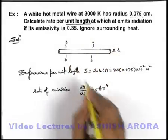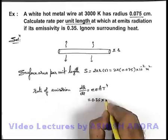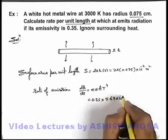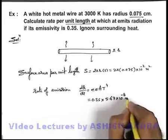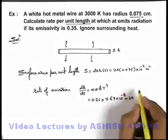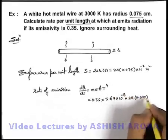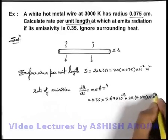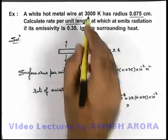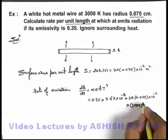So we substitute the values: emissivity is 0.35 multiplied by Stefan's constant is 5.671 into 10 to power minus 8, area we already calculated as 2 × 0.075 into 10 to power minus 2, multiplied by T to power four. As temperature is 3000 kelvin it is 3000 to power four.